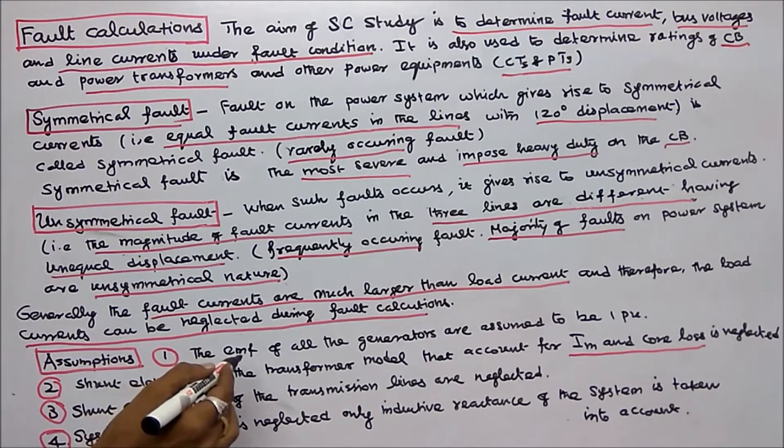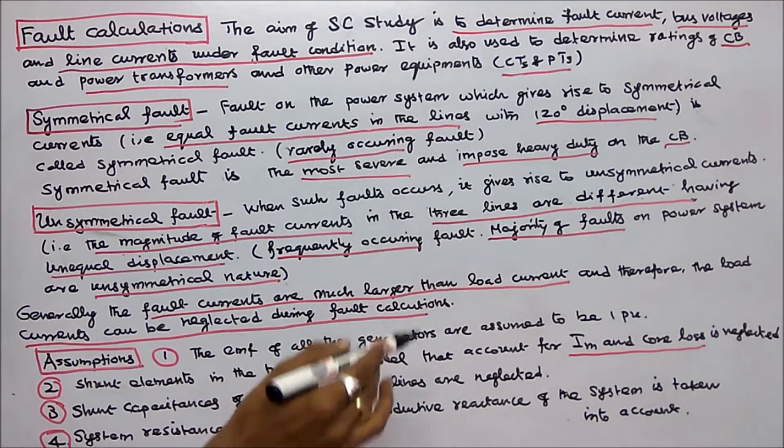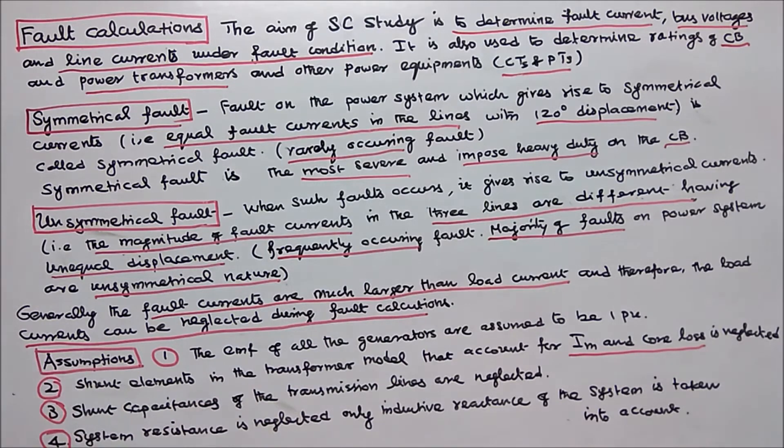Assumption one: The EMF of all the generators are assumed to be one per unit. Assumption two: Shunt elements in the transformer model that account for magnetizing current and core loss are neglected. Assumption three: Shunt capacitance of the transmission lines are neglected.